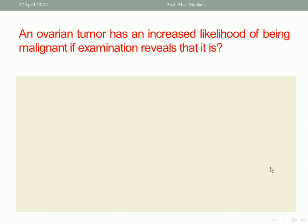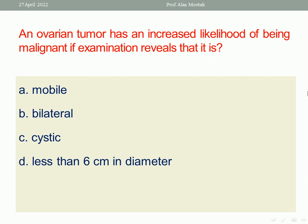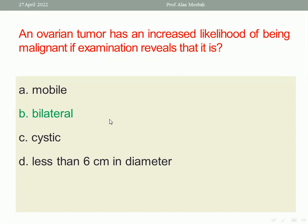An ovarian tumor has an increased likelihood of being malignant if examination reveals that it is: mobile, bilateral, cystic, or less than 6 cm in diameter. One of the signs of malignancy is to be bilateral. So the right answer is bilateral.